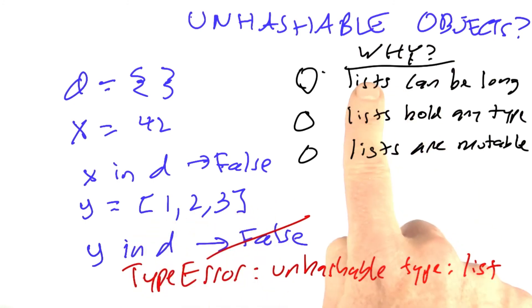Are lists unhashable because lists can be arbitrarily long, or because lists can hold any type of data as the elements, not just integers, or because lists are mutable? I recognize this might be a hard problem if you're not up on hash tables. This might not be a question you can answer, but give it a shot and give me your one best response.